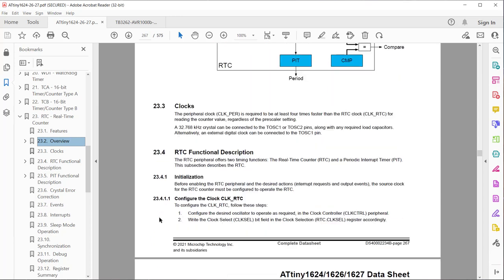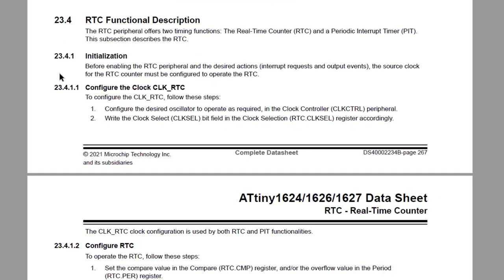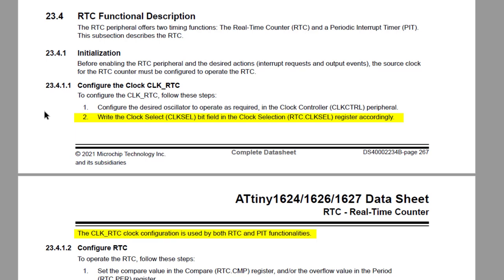Moving on to the functional description, the RTC offers two timing functions: the real-time counter, RTC, and the periodic interval timer, PIT. For the RTC initialization, before enabling the RTC peripheral and its associated interrupts and events, the source clock must be configured. To configure the RTC clock, step one: configure the required oscillator in the clock control peripheral. Step two: write the clock select bit field in the RTC clock select register. Note that this RTC clock configuration is used by both the RTC and PIT functionalities.